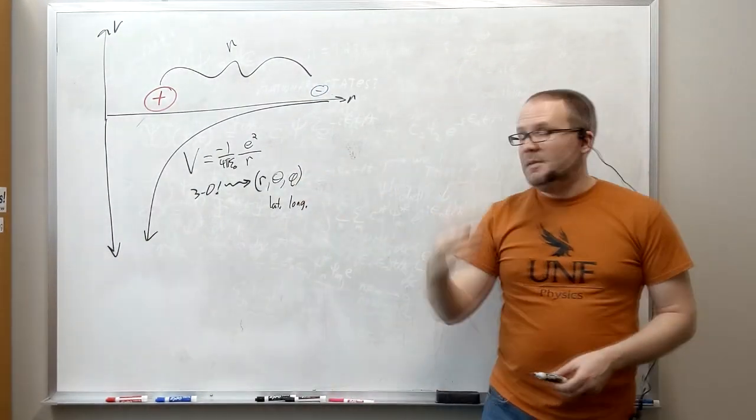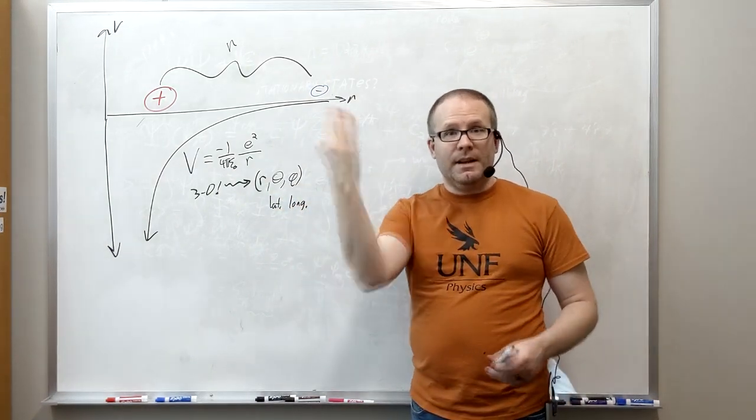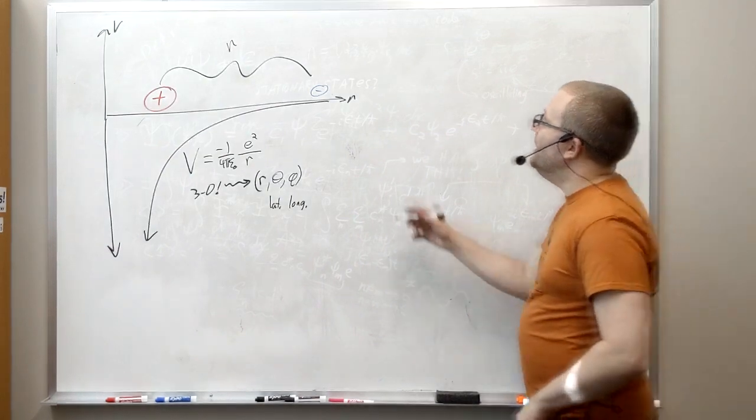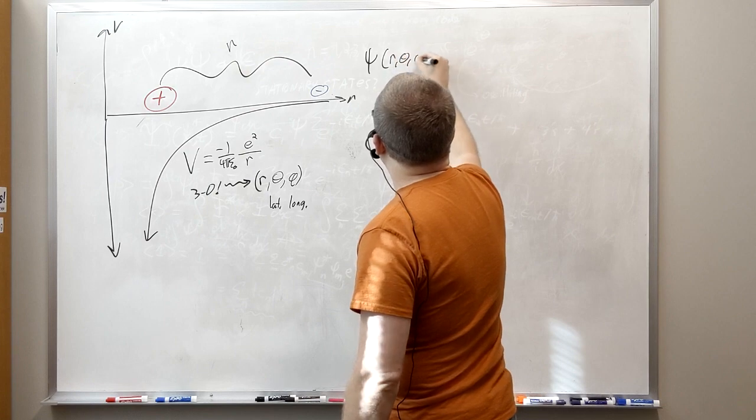Because it's in 3D, we have three independent variables: r, theta, and phi. That's what three dimensions means - you have three degrees of freedom of where the thing can go. And so what ends up happening is that your psi is now a function of r, theta, and phi.